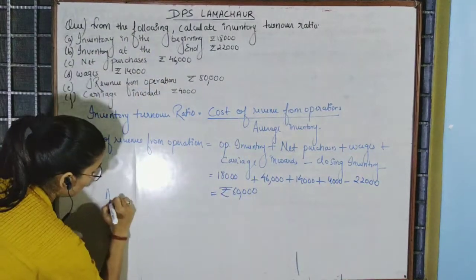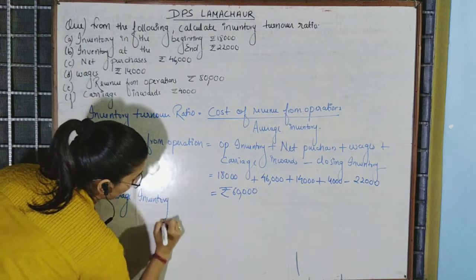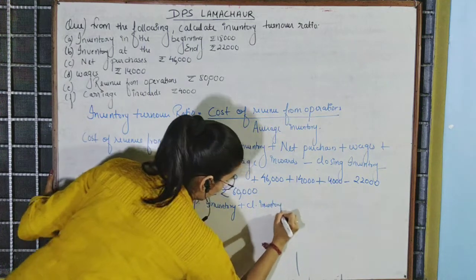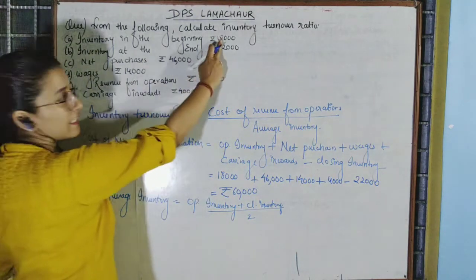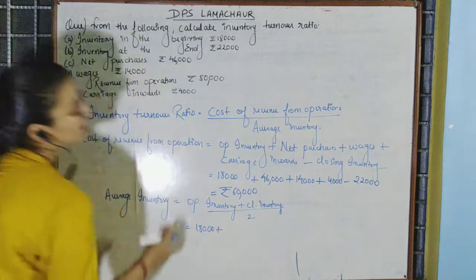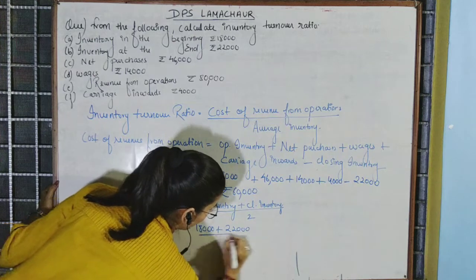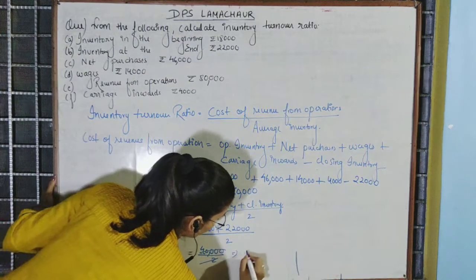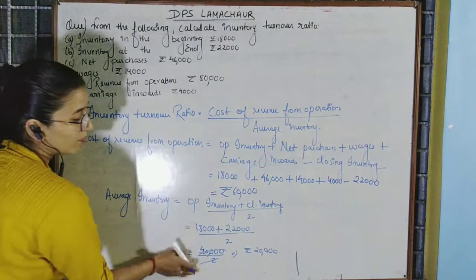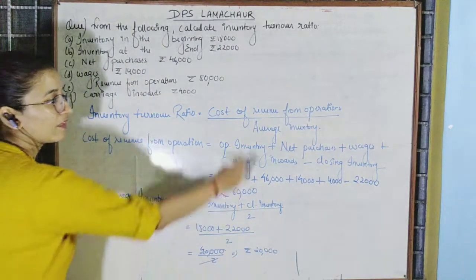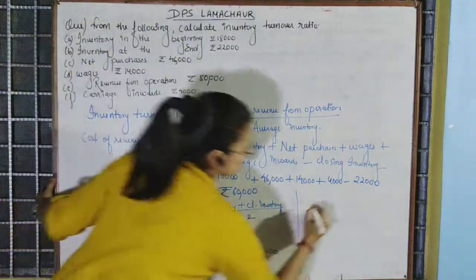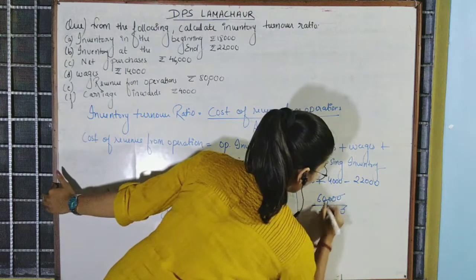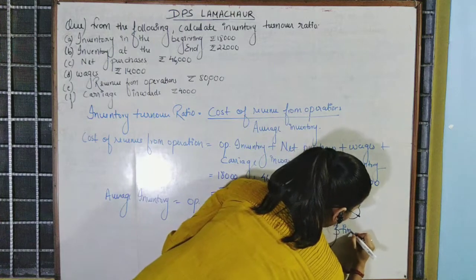Now we find average inventory: opening inventory Rs. 80,000 plus closing inventory Rs. 22,000, divided by 2, which gives Rs. 51,000 divided by 2, equal to Rs. 51,000. Putting these into the formula: cost of revenue from operations Rs. 60,000 divided by average inventory Rs. 20,000 gives an inventory turnover ratio of 3 times.